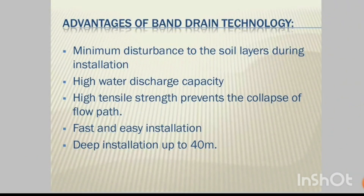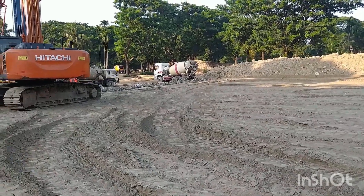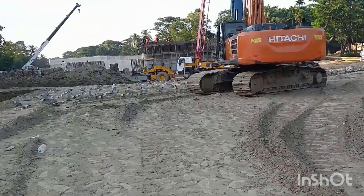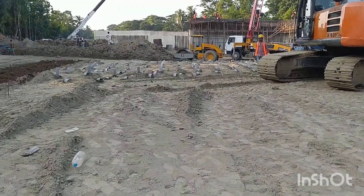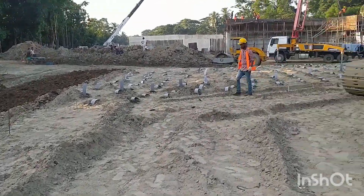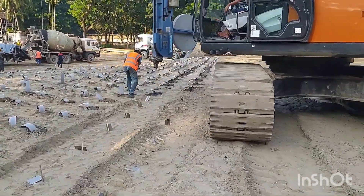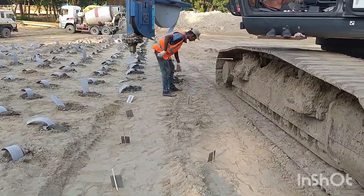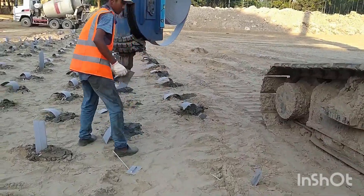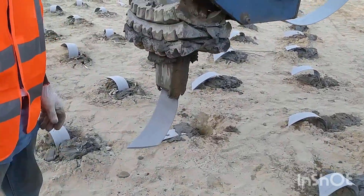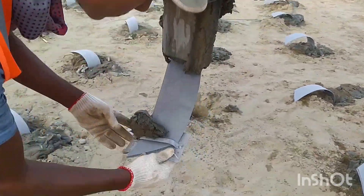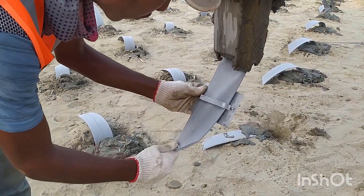Now let us look at what a band drain is, its components, its advantages, and the installation process. During installation, a mandrel or lance is used to drive the drain into the ground. Once installation is complete, we cut the drain and fix the base plate, which automatically locks at the bottom.